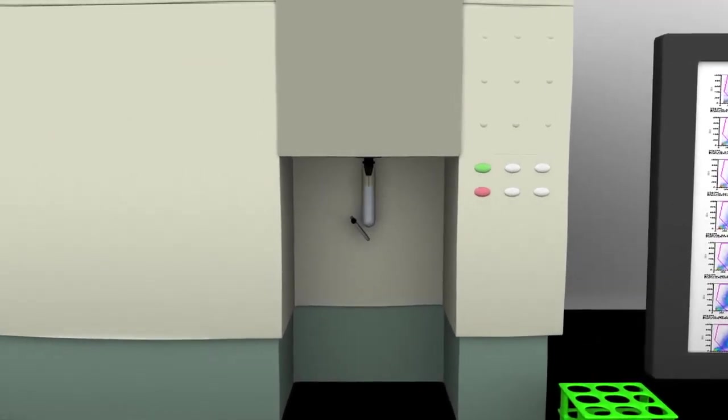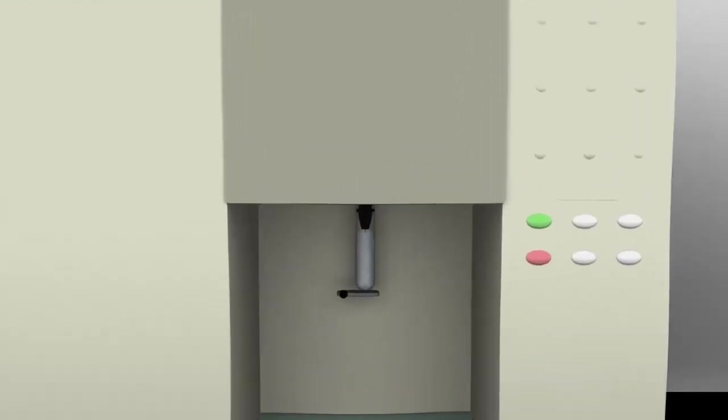How does a flow cytometer analyze the size, shape, and properties of individual cells?